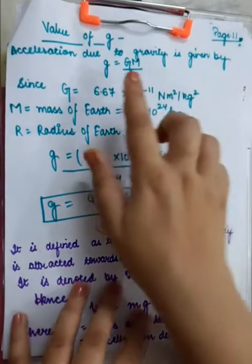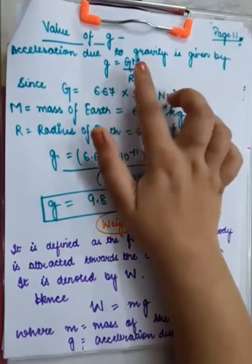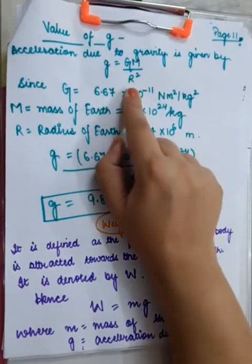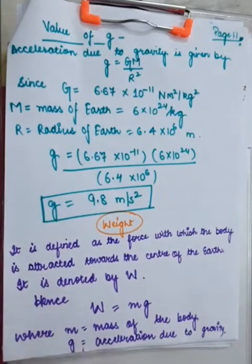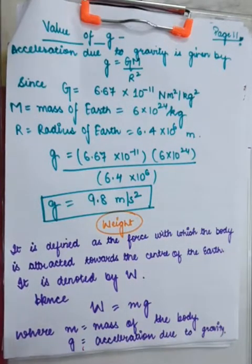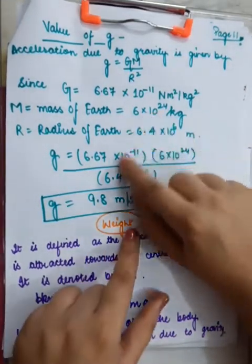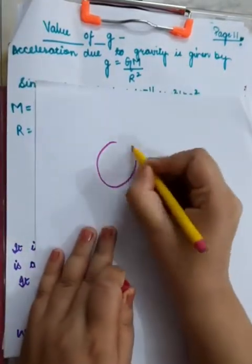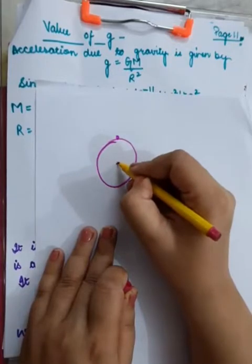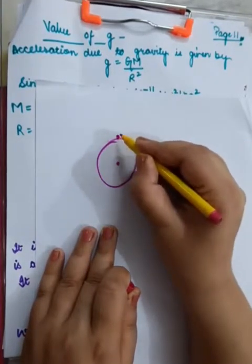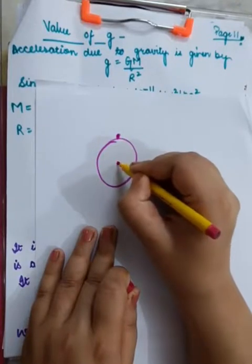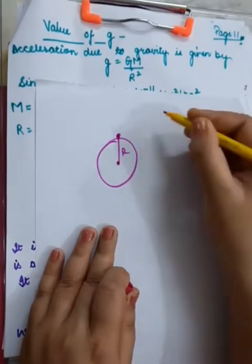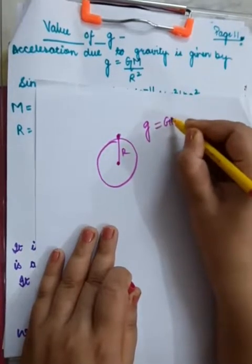Acceleration due to gravity is given by g equals to GM upon R square. If you take R as the radius of Earth — if the object is lying on the surface of Earth, then it will be separated from the center of the Earth by the radius. So small g will be given by GM upon R square.